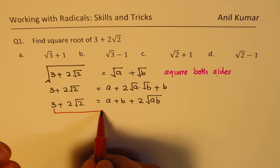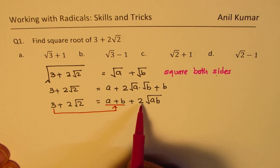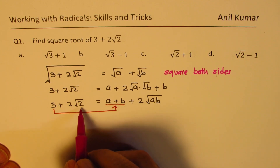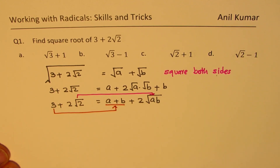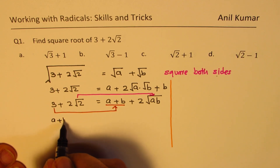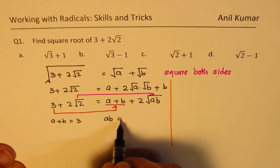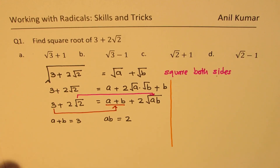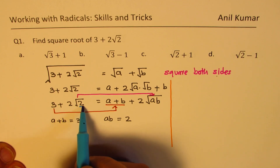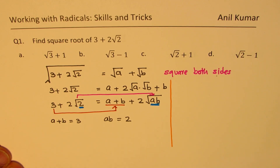If you notice, we can compare the terms and figure out the answer. The rational part 3 can be related to a plus b, and the radical part can be related to the second term. So we get two equations: a plus b equals 3, and ab equals 2. The 2 coefficients cancel and the number inside, 2, should equal ab.